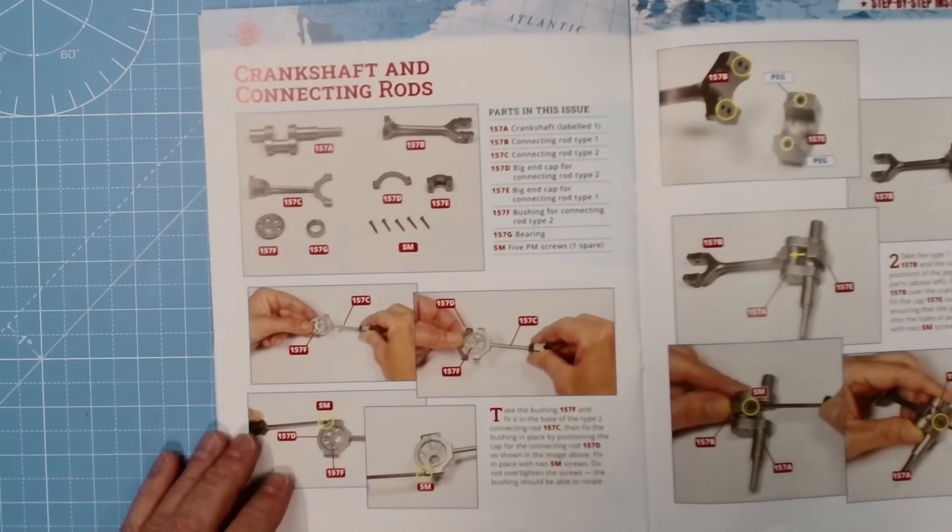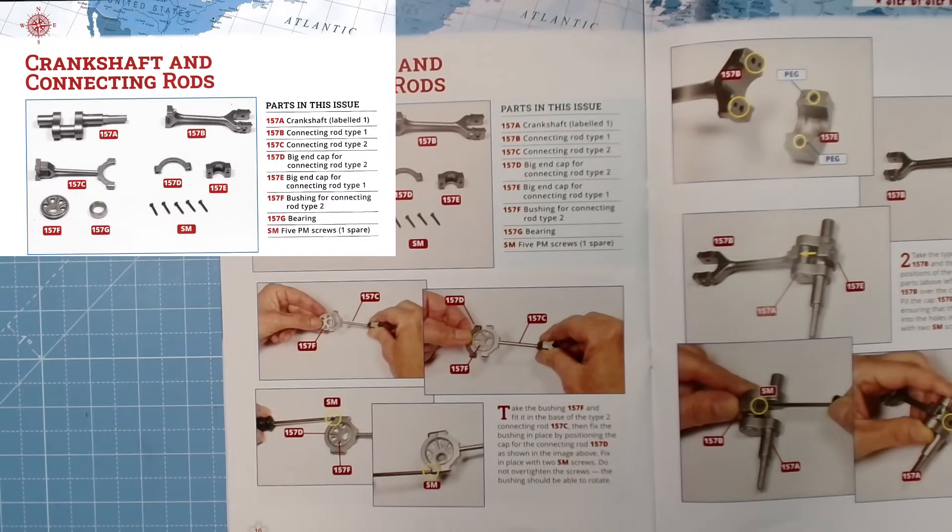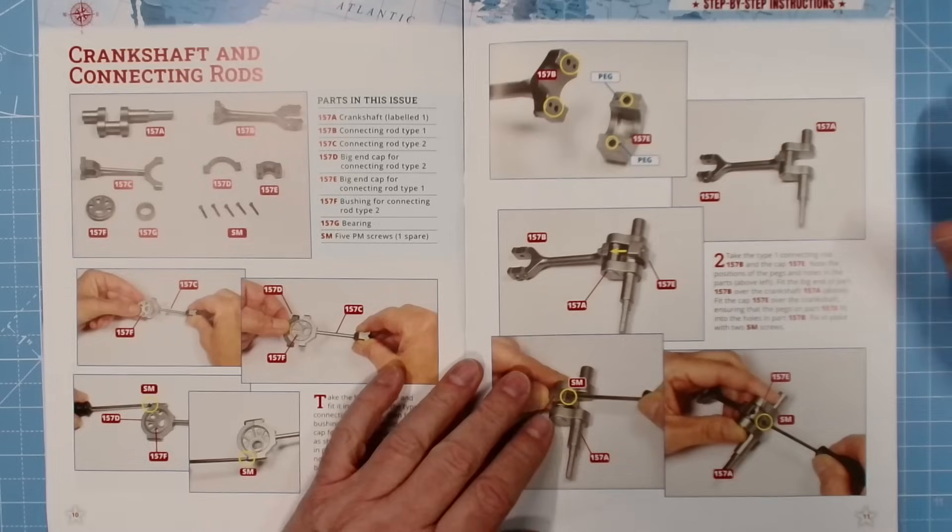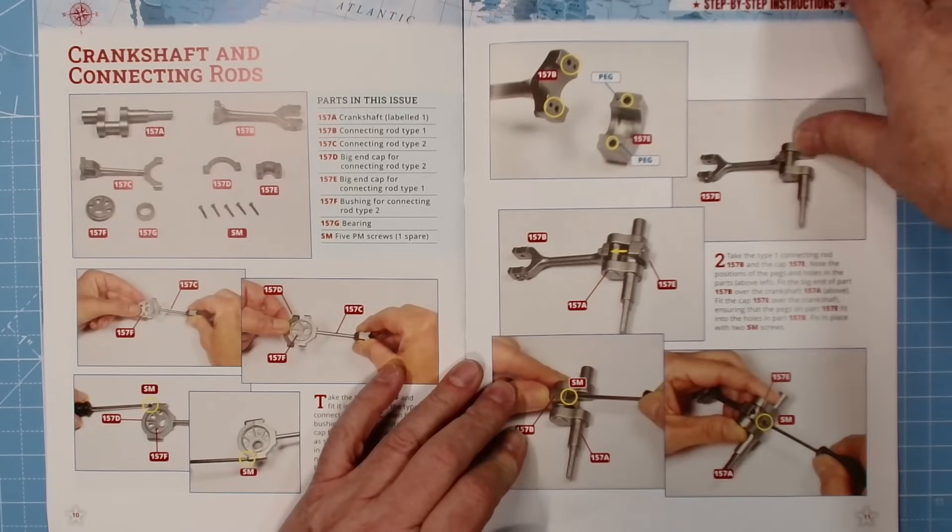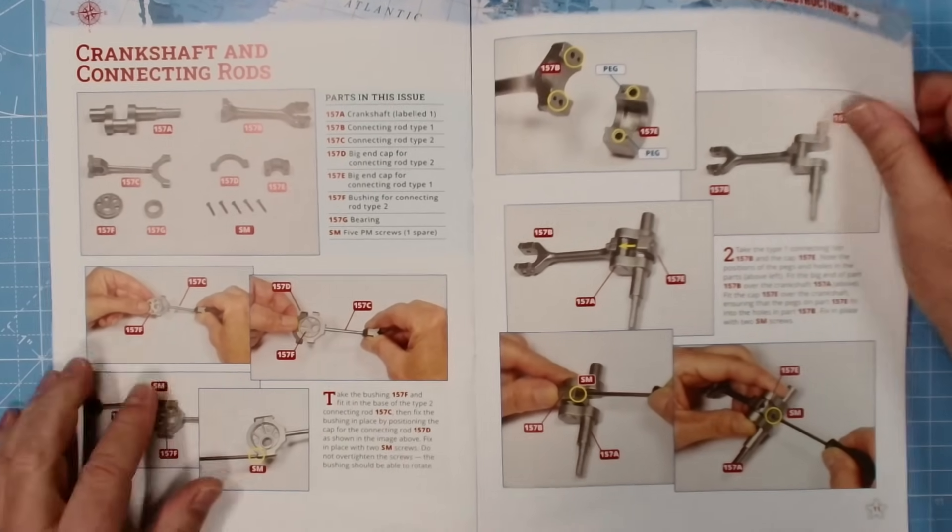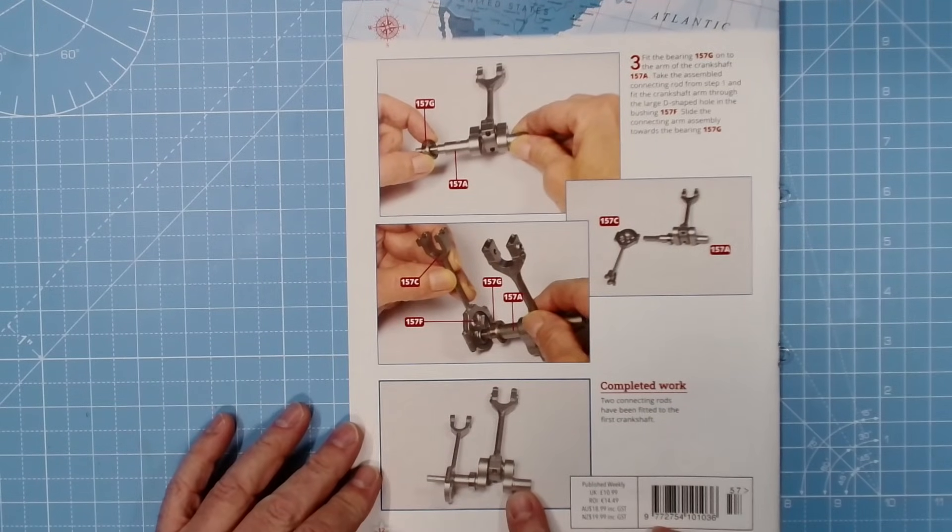Crankshaft and connecting rods, that's in this issue. 157A crankshaft level one, B is connecting rod type one, 157C is connecting rod type two, 157D big end cap for connecting rod type two, and 157E big end cap for connecting rod type one, 157F bushing for connecting rod type two, and 157G bearing and SM screws. All right, so we've got something different to do today. Excellent stuff. You can see the SM screws in play. Brilliant. And that is our completed work, two connecting rods have been fitted to the first crankshaft. Okay, those are the parts. Let's get on with the build, let's get the parts out.